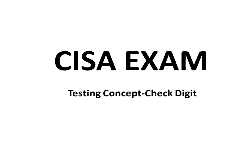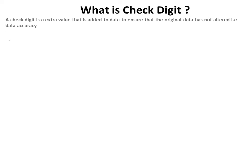This video deals with an important testing concept: check digit. A check digit is an extra value that is added to data to ensure that the original data has not been altered — that is, it is used as a data accuracy check.